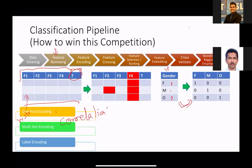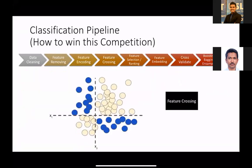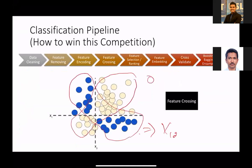Next is feature crossing. Feature crossing means you take two features and combine them into one new feature. For example, take feature X1 and feature X2 and create a new feature called X12. Maybe you group by gender and age together into one new combined feature. That is the broader idea of feature crossing and it is a very popular technique.